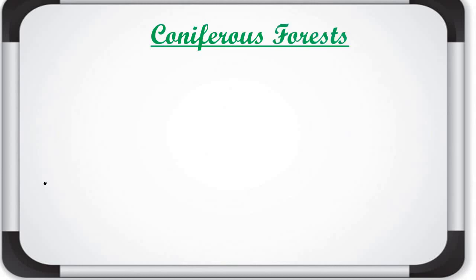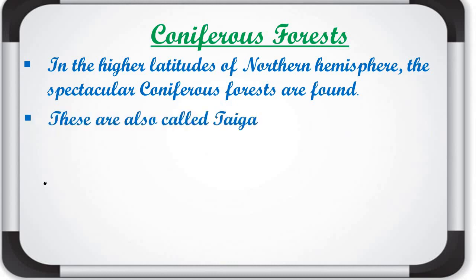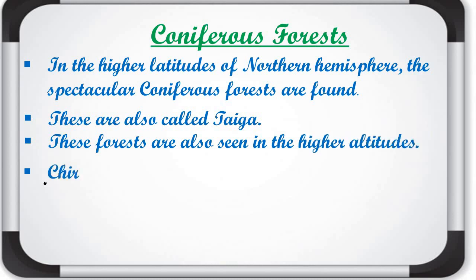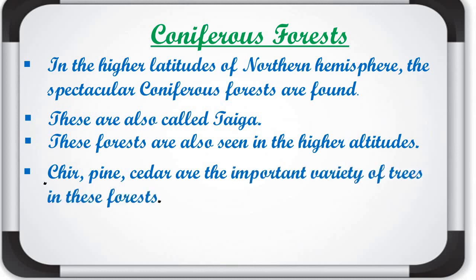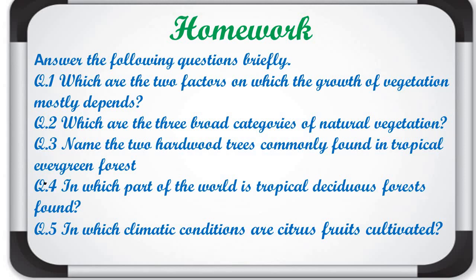Next are coniferous forests — cone-shaped trees. In the higher latitudes of the northern hemisphere, spectacular coniferous forests are found, also called taiga. These forests are also seen at higher altitudes. The main trees found here are pine, cedar, and fir. Animals found in coniferous forests include silver fox, mink, and polar bear.